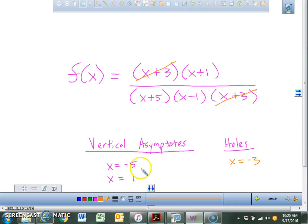So without even graphing it, you can still be able to find vertical asymptotes and holes. We'll continue this tomorrow. Thank you.